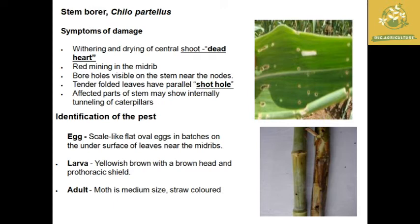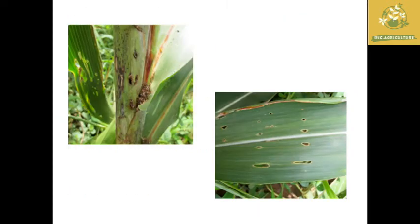Next is the stem borer, whose scientific name is Chilo partellus. The major symptoms are dead heart and shot holes on the tender leaf structures. Eggs are scaly, flat oval, found under the leaves near the mid-ribs. The larva is yellowish brown with a brown prothoracic shield. The adult is a medium-sized moth with a straw color.